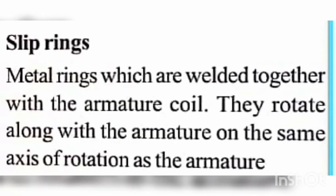The third part is slip rings. These are metal rings which are welded together with the armature coil. They rotate along with the armature on the same axis of rotation. The armature and the slip rings are joined together, and the two rings rotate in the same direction as the armature.